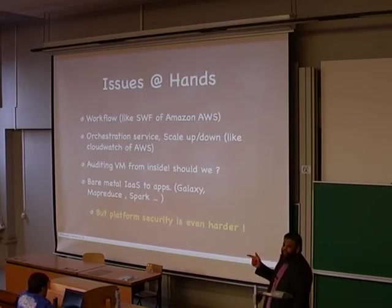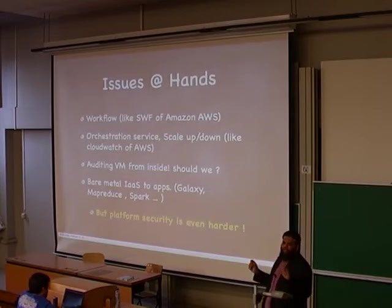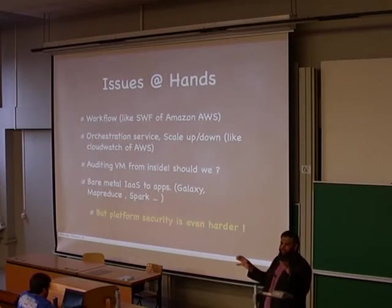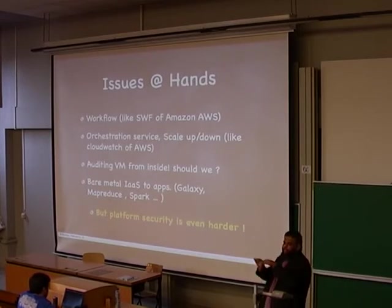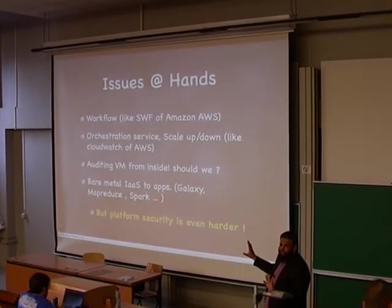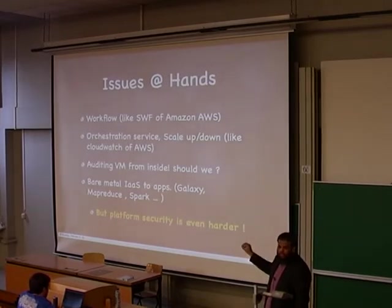Second unsolved issue is orchestration service. Users want a CloudWatch-like thing for Amazon in the private cloud. They want to define parameters based on RAM, CPU, time — for example, specify that between 9am and 5pm they need a certain number of instances, but when they go home the instances should be scaled back. We haven't implemented this because I couldn't find a good orchestration service for private cloud.